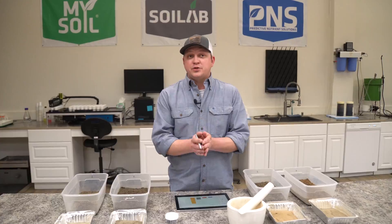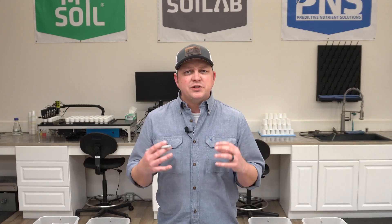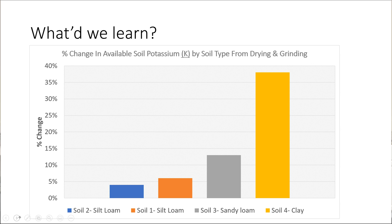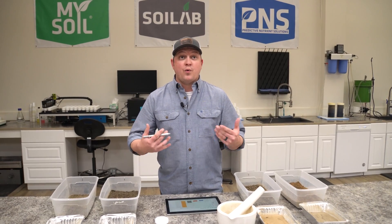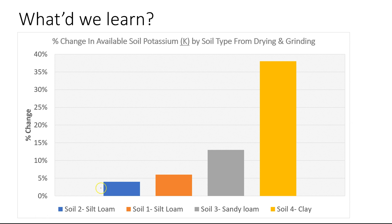So what did we learn? Well, the very first element or nutrient that we spoke about was potassium. The chart we're looking at here compares the dried and ground soil against the field moist soil. The units we're looking at today are just percent change. The values that come out of the soil test are parts per million, so we compared parts per million against parts per million and came up with the percent change. What we learned was that in both of our silt loam soils, we saw about 5% to 7% more potassium measured when we dried and ground that soil. In theory, that might be overestimating the bioavailable potassium in those soils, but 5% to 7% isn't a huge amount.